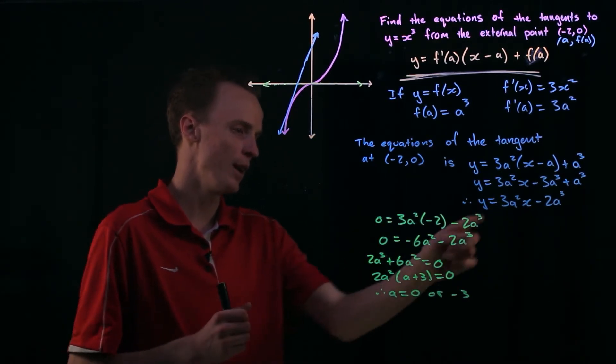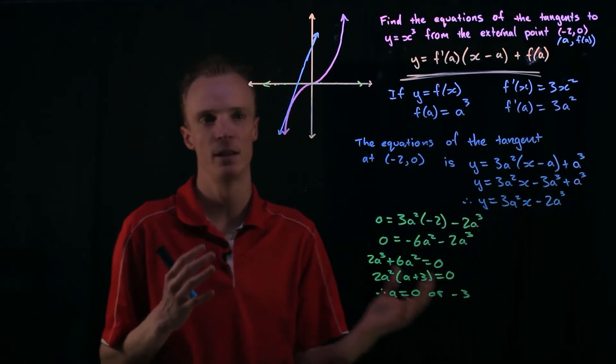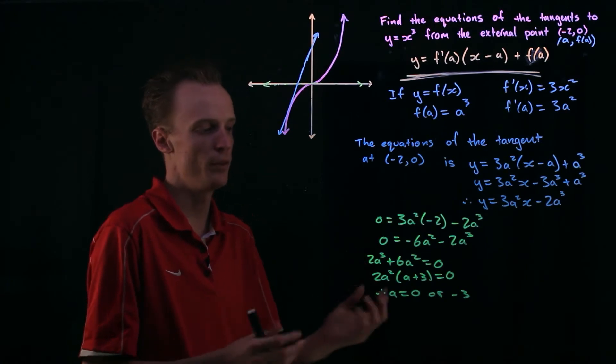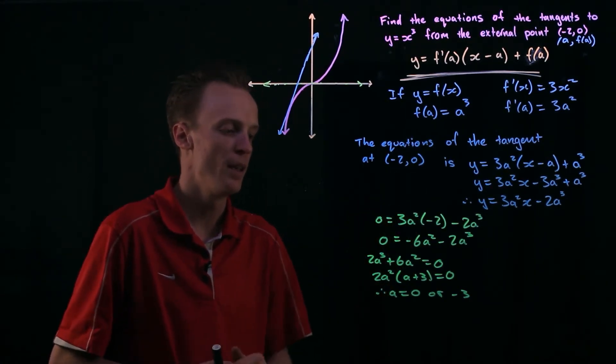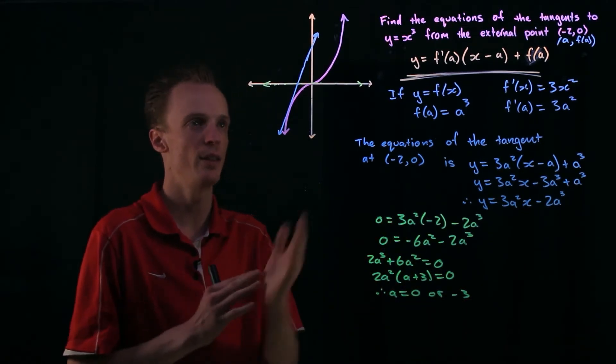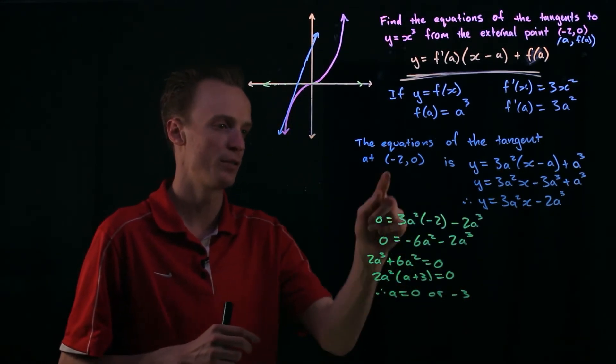Well we found an equation that represented the linear tangent for anywhere along this function. And what we've just found by substituting this point into it is the two values of a which will allow this tangent to pass through this point.